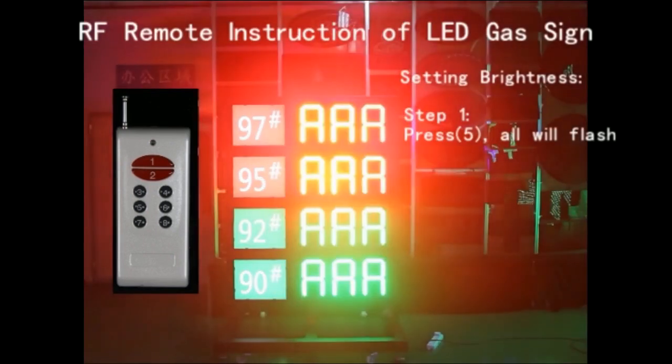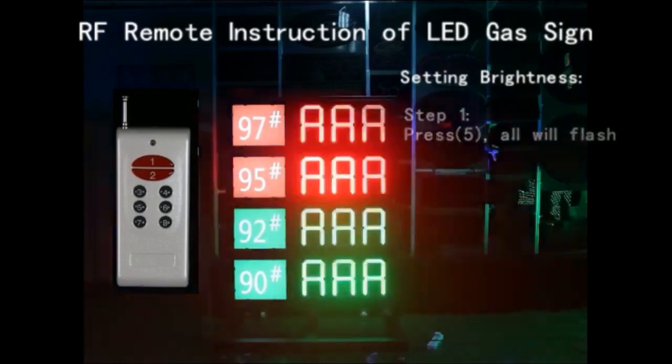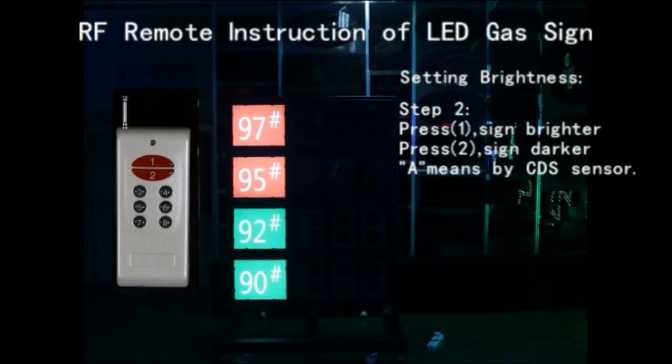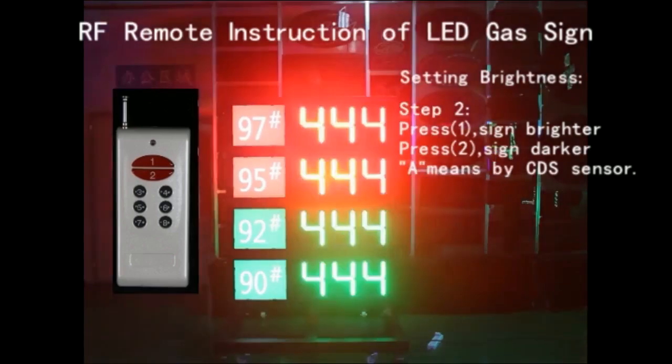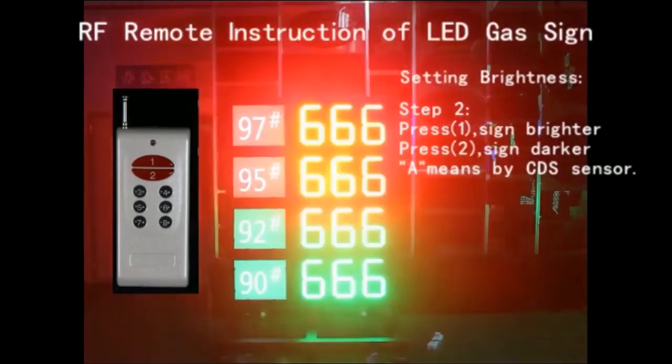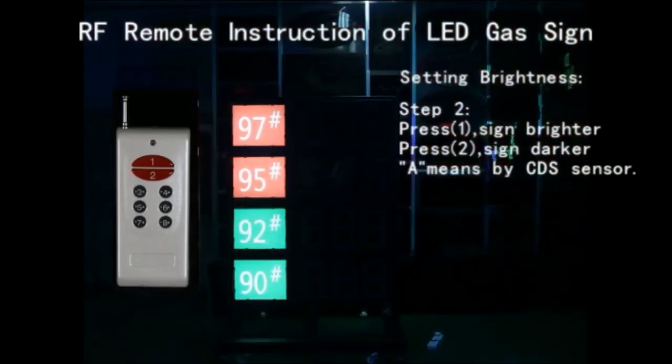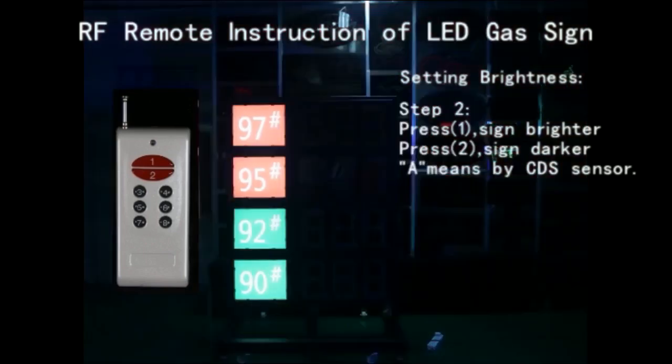All digits will begin to flash. Step 2: Press button 1, the sign becomes brighter. Press button 2, the sign becomes darker.